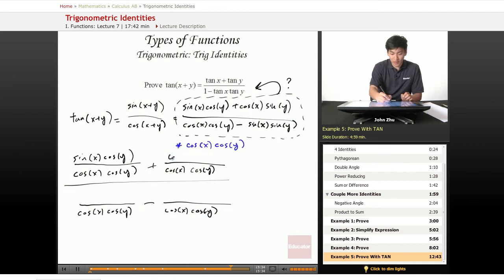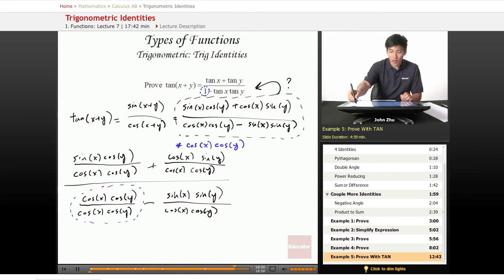And we'll just go ahead and fill in these terms real quick. Cosine of x sine of y, cosine of x cosine of y minus sine of x times sine of y. And immediately we see that this term right here equals 1. And coincidentally, there's a 1 in the proof. So we know we're on the right track.